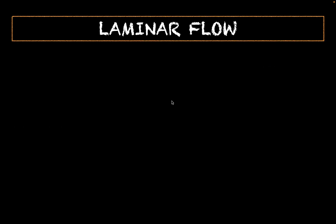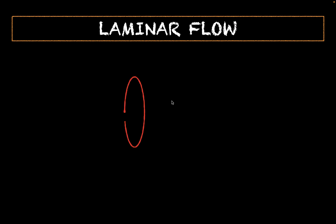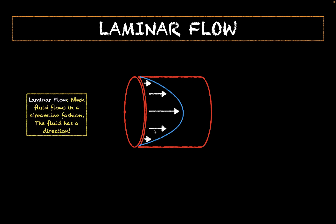Now let's talk about the two types of flow. The first is laminar flow, where fluid flows in a particular direction and the velocity vectors — represented by white arrows — are all organized parallel to each other. Laminar flow is when fluid flows in a streamlined fashion with a specific direction.